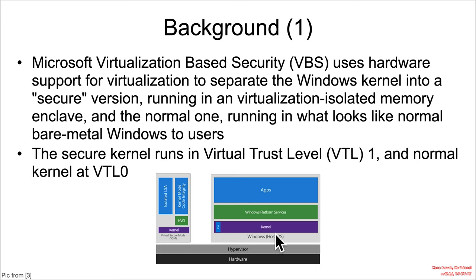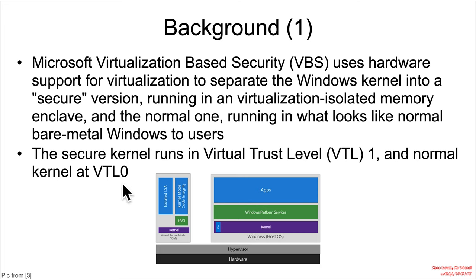They've got the normal kernel on one side and the secure kernel on the other side. They refer to the one running the normal kernel as virtual trust level zero — zero is a lower number, so it's less trusted — and virtual trust level one is the secure kernel.